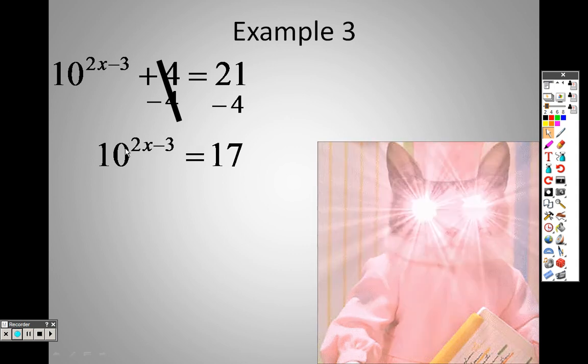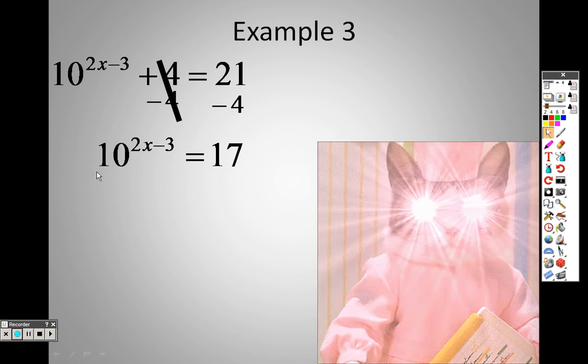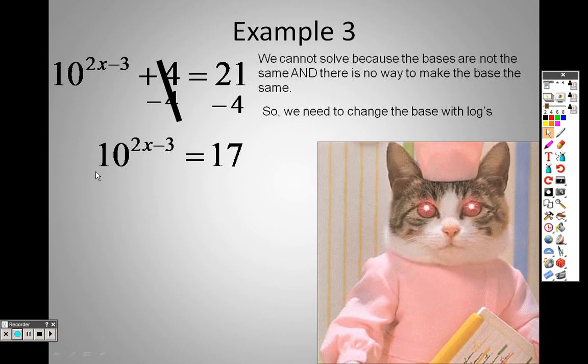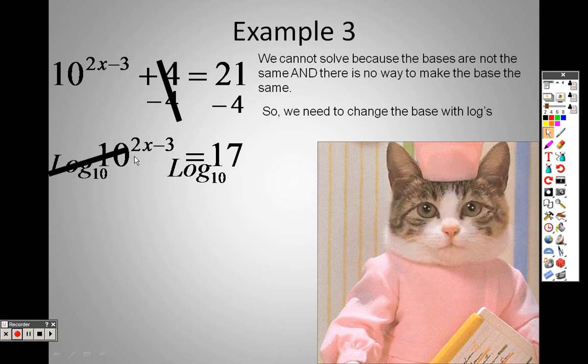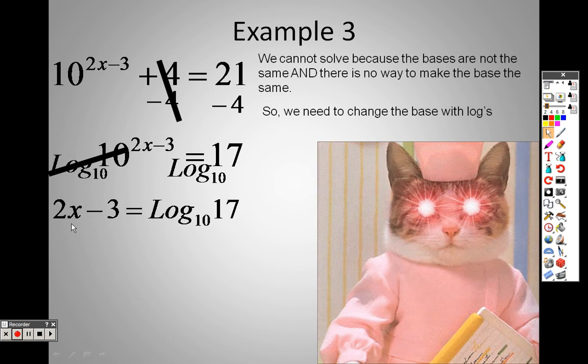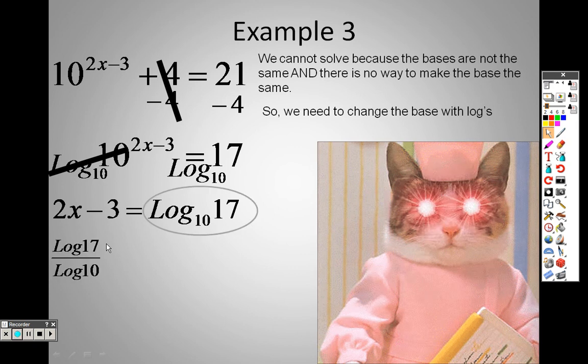Now what I can do is I can try to see if I can rewrite this. Well, since this is a base 10, I could do a log with a little base 10 on both sides. Log base, little base 10 on both sides. That means these cancel out, so all I have left on that side is 2x minus 3, and I have log base 10, 17. So, I can change that into a number by doing log 17 over log 10, and when I do that, I get roughly 1.23. So, really, I have 2x minus 3 equals 1.23.